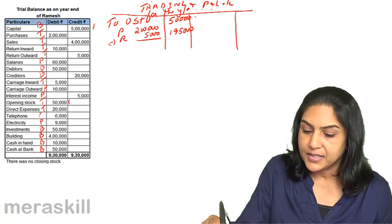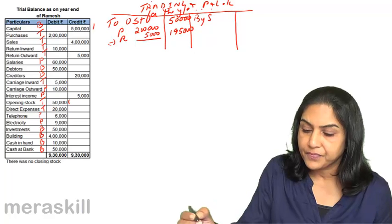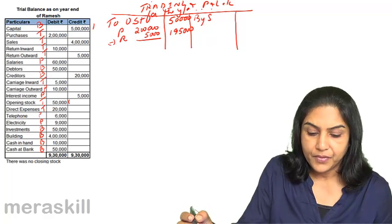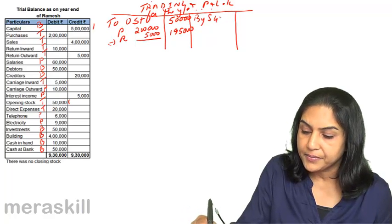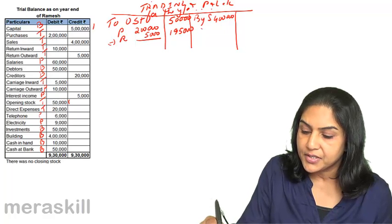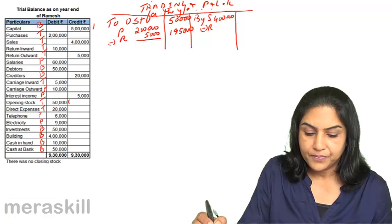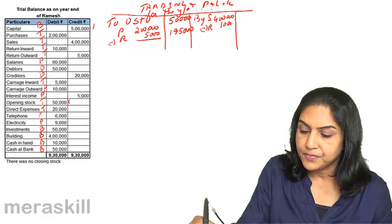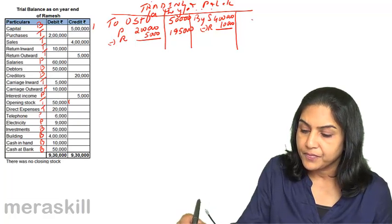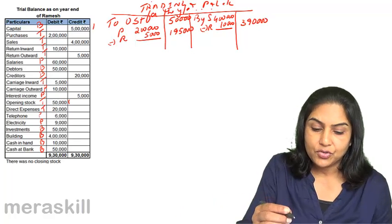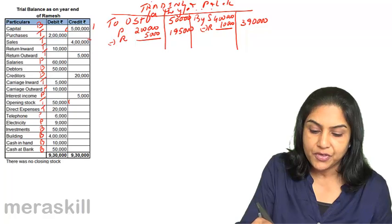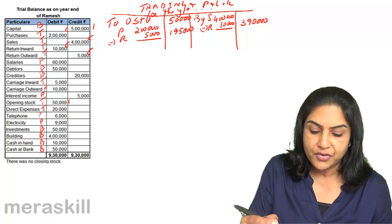By sales: 4,00,000. Less return inward: 10,000. That gives us net sales of 3,90,000. We have now taken purchases, sales, return inward, and return outward.